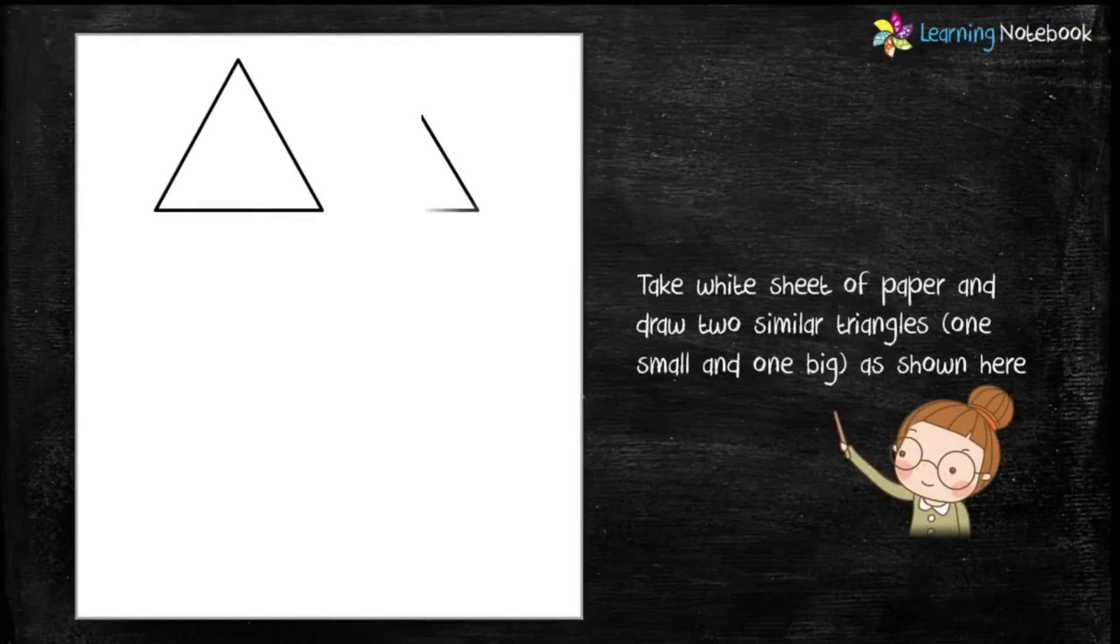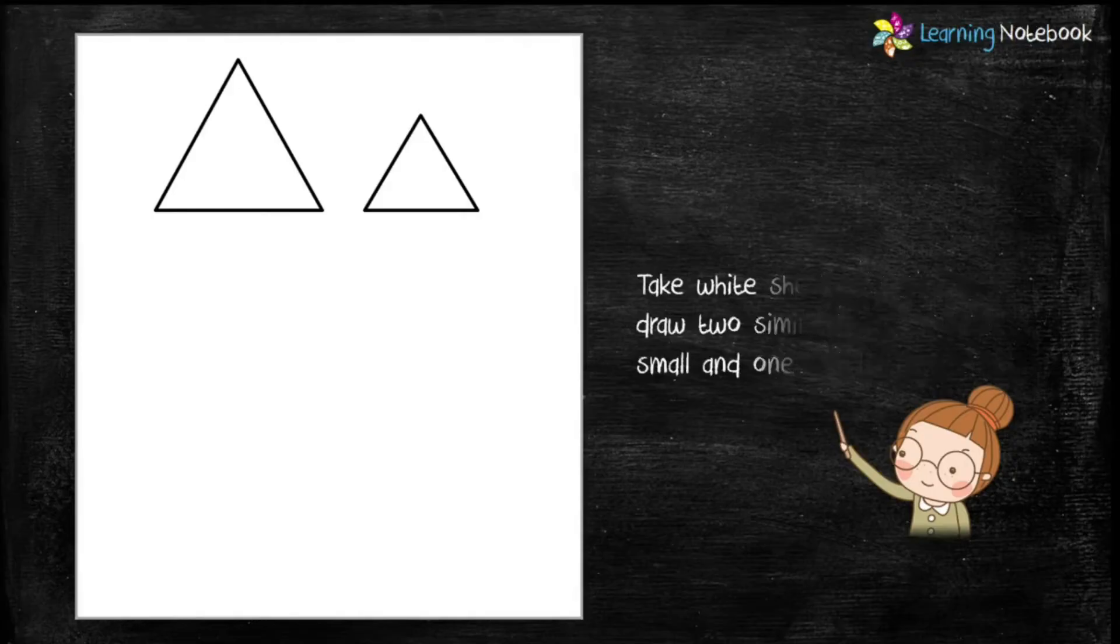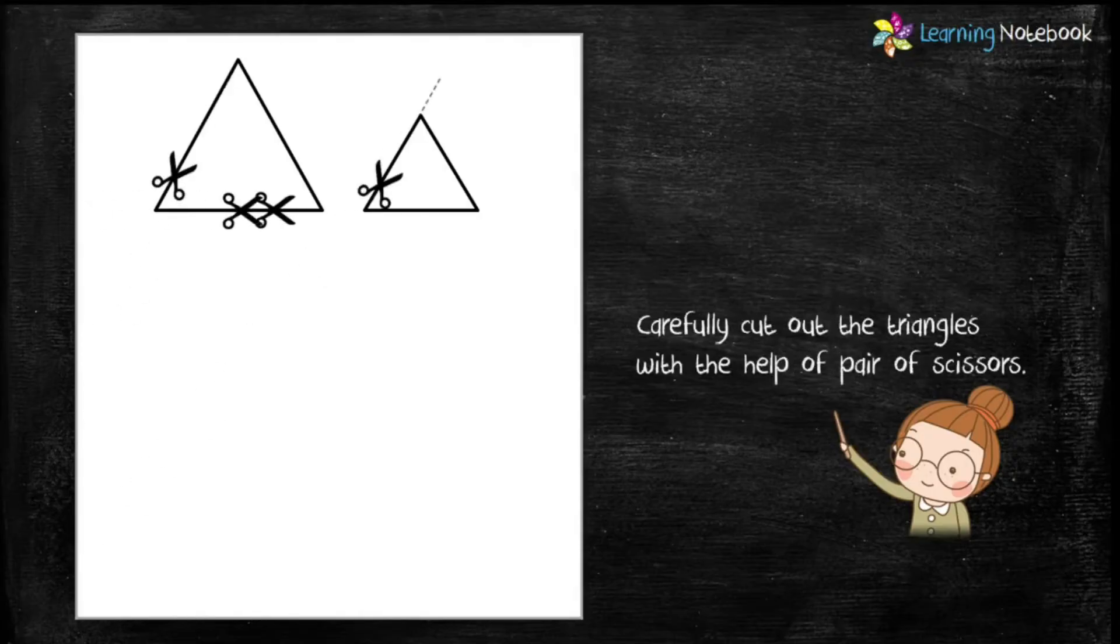Now let's start with the activity. Take a full white sheet of paper and draw two similar triangles, one small and one big as shown here. Now carefully cut out these two triangles using a pair of scissors.